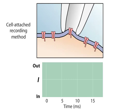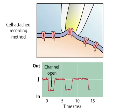A record of the current flowing through a single ion channel reveals when the channel is in an open or closed state. The currents flowing through single channels are called microscopic currents, to distinguish them from the macroscopic currents flowing through a large number of channels distributed over a much more extensive region of surface membrane.